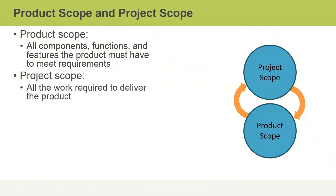Project Scope is the work required to deliver the product, so Project Scope is based on Product Scope. If new features are added to the product, it impacts Product Scope as well as increases Project Scope. At the same time, if the project budget is cut, you may need to decrease quality or amount of work completed, which will impact Product Scope. So you see how Product Scope and Project Scope are different, yet very closely related and intertwined.